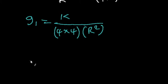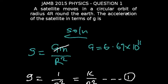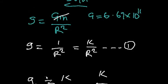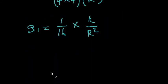We can write that as g subscript 1 equals 1 over 16 multiplied by k over R squared. From our equation 1, k over R squared was g, so that will simply give us g subscript 1 equal to 1 over 16 multiplied by g, that will be g over 16.